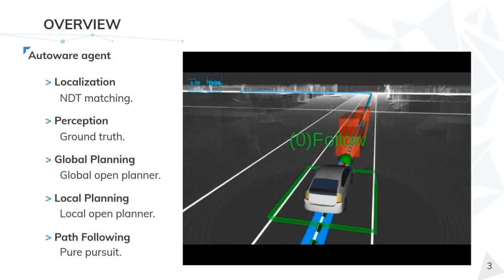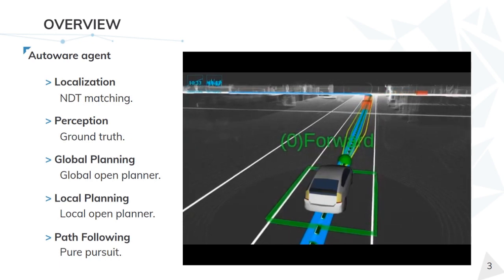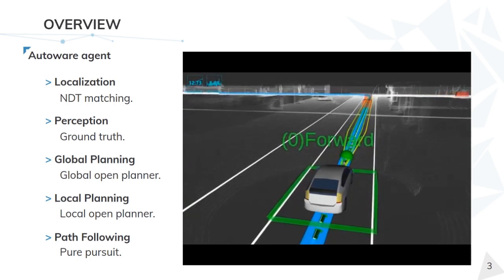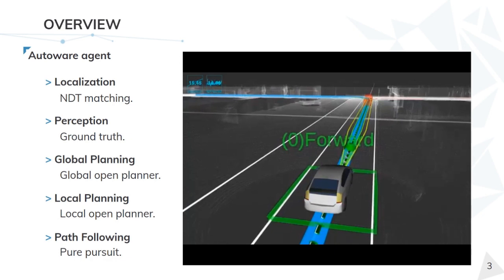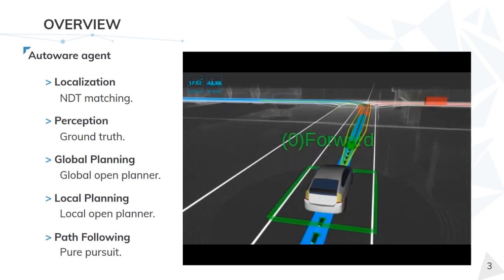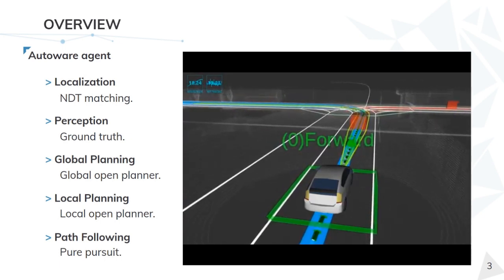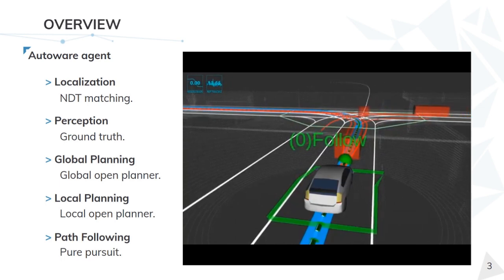Regarding the ego vehicle, we can see the behavior state changing from forward to follow based on the distance of the vehicle ahead. We can also see the different trajectories computed by the local planner, plotted in different colors based on the cost computed by the planner. When the planner detects a blockage ahead, it plots the trajectories in red. The red bounding boxes are the ground truth obstacles coming directly from the Carla simulator, and plotted in red are the predicted trajectories for each obstacle computed by the open planner, representing the different possibilities for each obstacle at each moment.